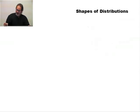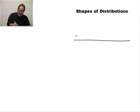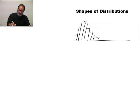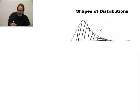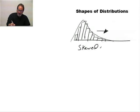Another common shape that you could come across: suppose we did a histogram and what we saw was essentially a mound, but then it tails off to the right. If I were to draw a line, you see this tail here essentially moving over to the right.